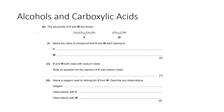Now let's talk about alcohols. Two alcohols V and W are given. V has the OH group bonded to a carbon that is bonded to just one other carbon and two hydrogens — so V is a primary alcohol. W has the OH group bonded to a carbon bonded to three other carbon atoms — so W is a tertiary alcohol. Both react with sodium metal.